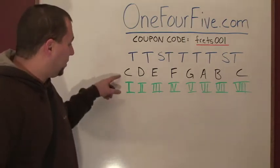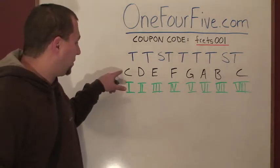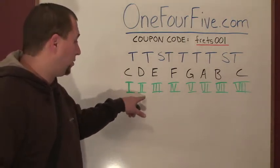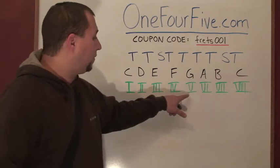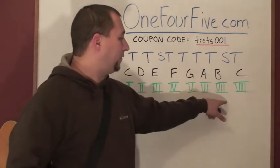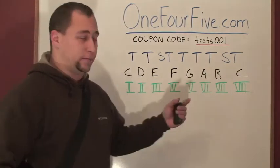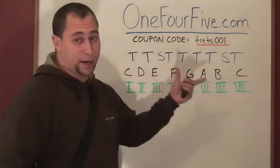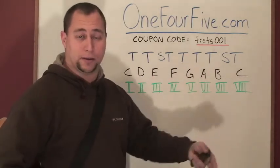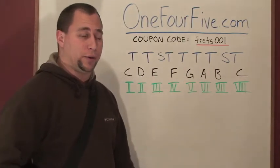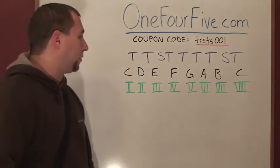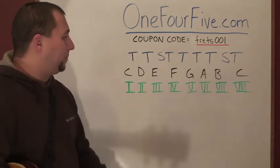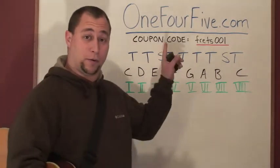What I've also done is called each of these, starting with the C: 1, 2, 3, 4, 5, 6, 7, 8. The C in C is 1 and 8 — 8 is the eighth note in the scale because it repeats itself as the octave. Anyway, that may seem complicated, but it's not. Go to 145, check it out.